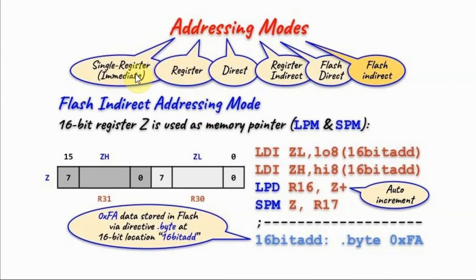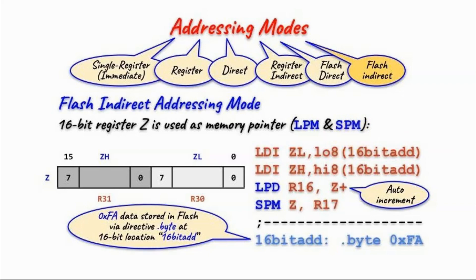In a future video, all addressing modes in AVR assembly will be discussed in detail with practical examples. In this video, we focus on flash indirect addressing mode, where the 16-bit register Z is used as a memory pointer. Register Z is the register pair R30 and R31. The two instructions used to access data in flash memory via pointer Z are Load Program Memory (LPM) and Store Program Memory (SPM) — where program memory is another word for flash memory.